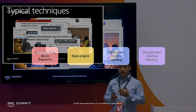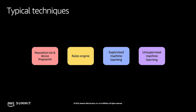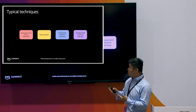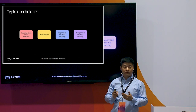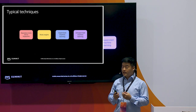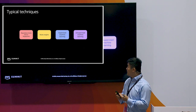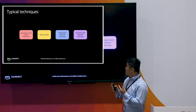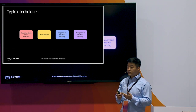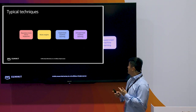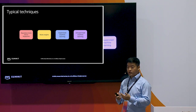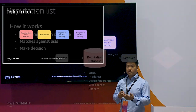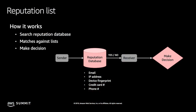Traditionally, there are roughly four techniques to fight against fraud: reputation lists or device fingerprints, rules engines, supervised machine learning, and finally unsupervised machine learning. I'm going to do a comparison among them.